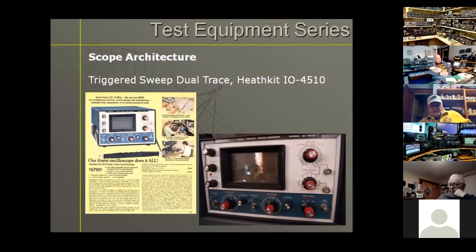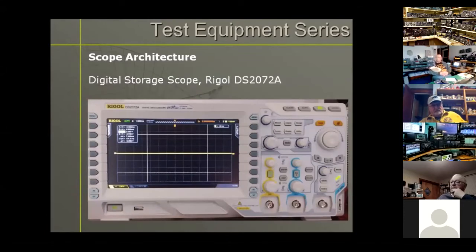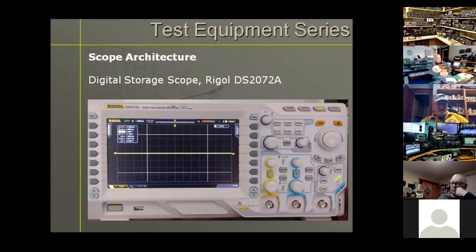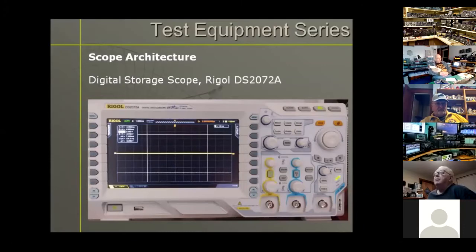In the digital scope realm, you'll find that the Chinese manufacturers have done some pretty tremendous jobs getting the cost of scopes down. Here's a Rigol digital scope, 70 MHz dual channel. I only have one channel displayed here in the yellow line. You've got horizontal cursors for measuring amplitude and vertical cursors for measuring time, with results displayed in the little square in the upper left-hand corner of the display.